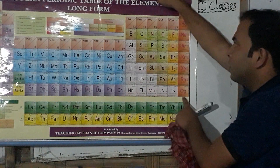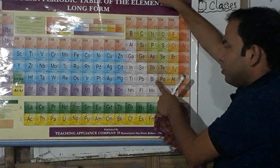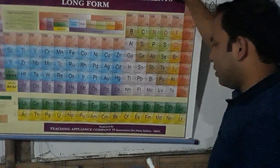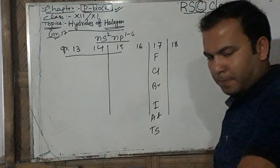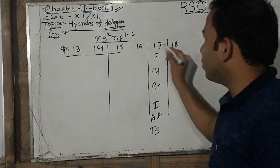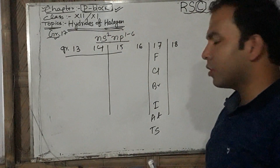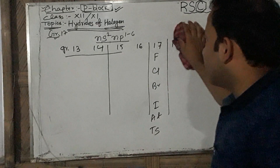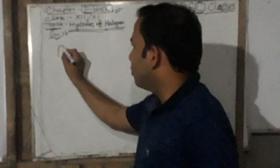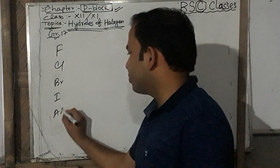We are discussing Group 17 elements. In this session we focus on the hydrides of halogens. The halogens are fluorine, chlorine, bromine, iodine, astatine, and tennessine.